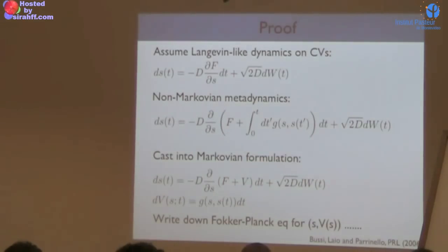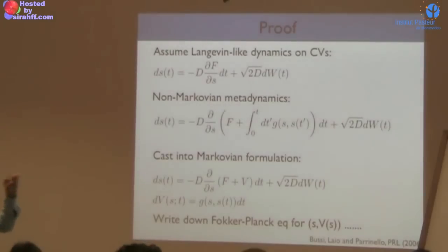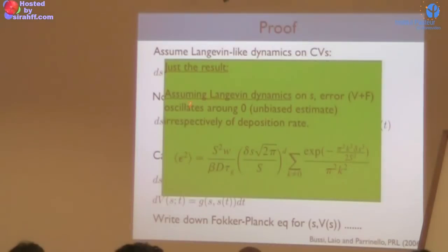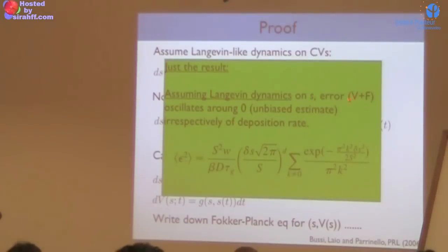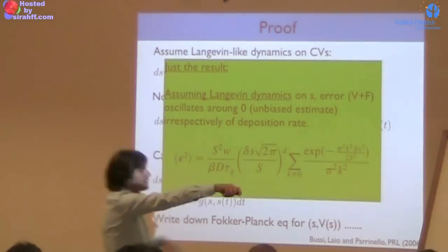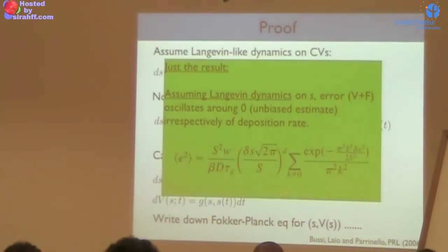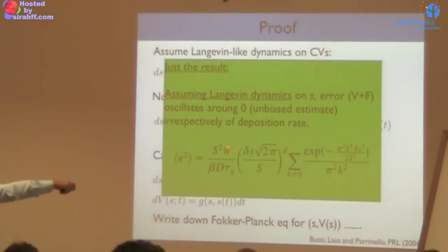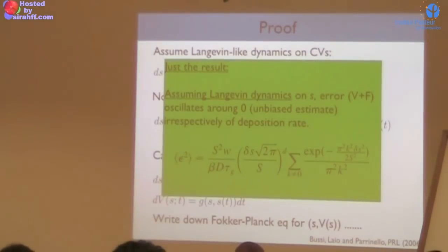Assuming Langevin dynamics for S, you can estimate the error on V plus F. The key scaling is with the Gaussian deposition rate and diffusion coefficient. This gives a theoretical foundation for the empirical prediction. Q: How would you know if your Langevin dynamics assumption is not valid? A: This assumption is the same as saying your collective variable represents the slow dynamics of the system. It's difficult to test from the error alone, but you can test it because metadynamics doesn't converge properly when the collective variable is wrong. You will see very large fluctuations in the estimate of F.